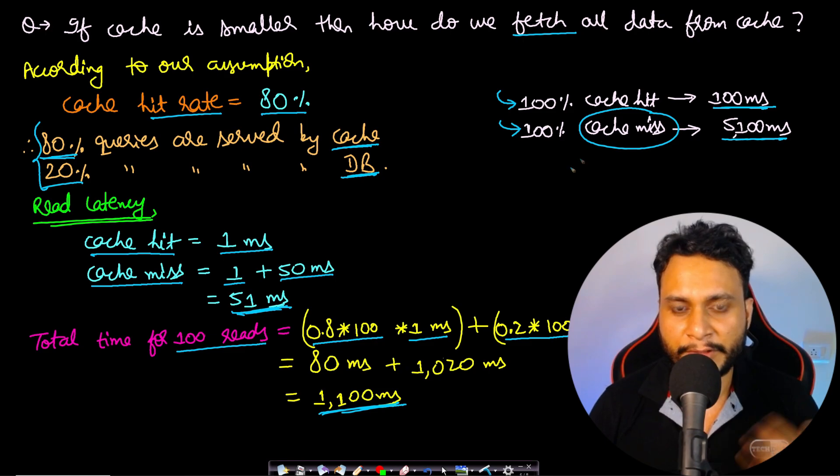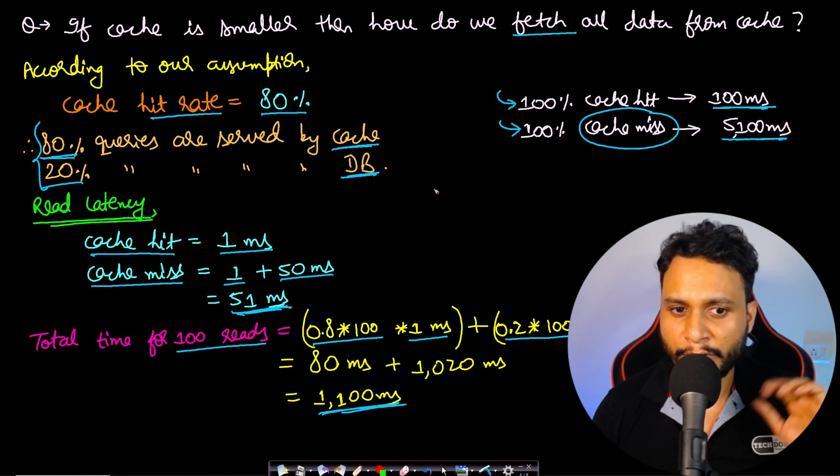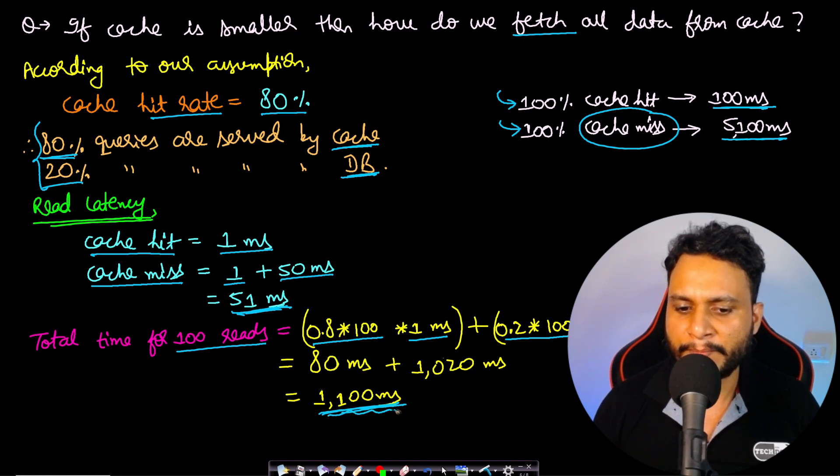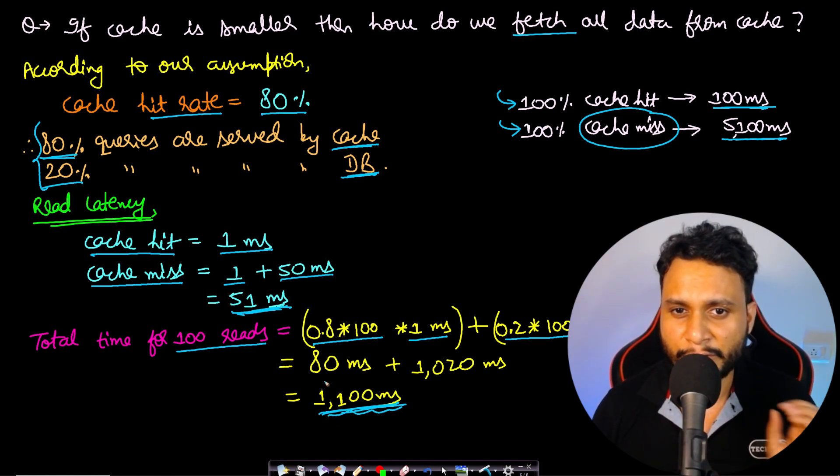It is a much better deal to use a cache. Since the cache memory was smaller, we could not load everything into the cache, but we loaded the most frequently accessed items, and that is how we improved the latency of reads. This is how cache complements database in our architecture.